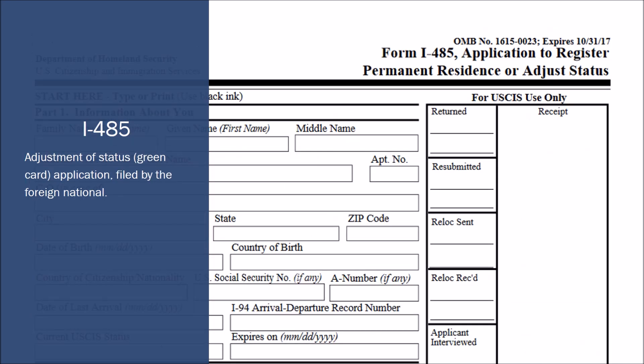The I-485 is, in a sense, the main form used in the adjustment of status process, and it's filed by the foreign national — the person who's applying for the green card. The way I think about it: the I-130 is the invitation from the U.S. petitioner, and the I-485 basically says, 'Thank you very much for that invitation — now I would like to take that invitation and turn it into a green card or lawful permanent resident status.'